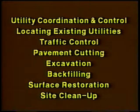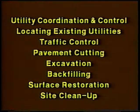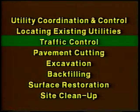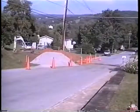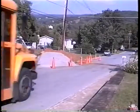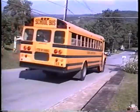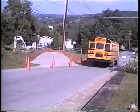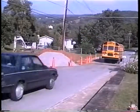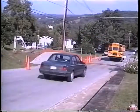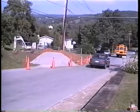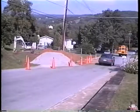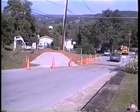All utility work, whether done in the roadway or on the roadside, calls for serious attention to traffic control. Pavement openings, of course, involve lane closures. Most roads or streets cannot be entirely closed to traffic. So even when full-width crossings must be made, they're done incrementally to allow one or more lanes to remain open for traffic.